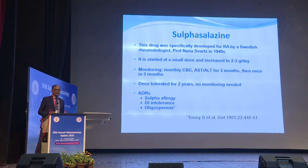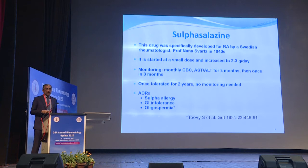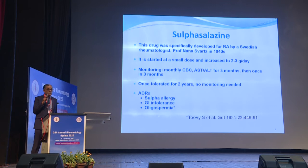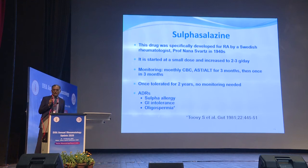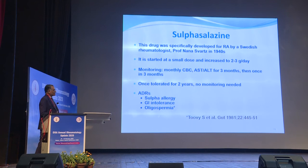Oligospermia is an important side effect of sulfasalazine. Although textbooks mention it as uncommon — around 3 to 4% — one study found that out of 28 males systematically evaluated, 18 had problems with sperm count and motility, contributing to infertility. Be very careful when a young male patient is on sulfasalazine and undergoing infertility workup. This is not a rare problem at all.